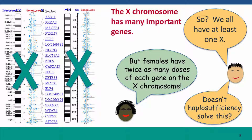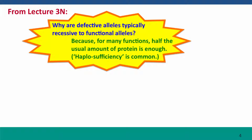We learned about haplosufficiency in Module 3, where one copy or two copies — as long as one functional copy was good enough to give normal function. Just to remind you: in the context of talking about why defective alleles were very often recessive to functional alleles, I pointed out that for many functions, having half the normal amount of protein is enough to get the job done. The term to describe this is haplosufficiency — being haploid for a functional copy of the gene, having one functional copy, is enough to accomplish the same functional task as is normally accomplished by having two functional copies.